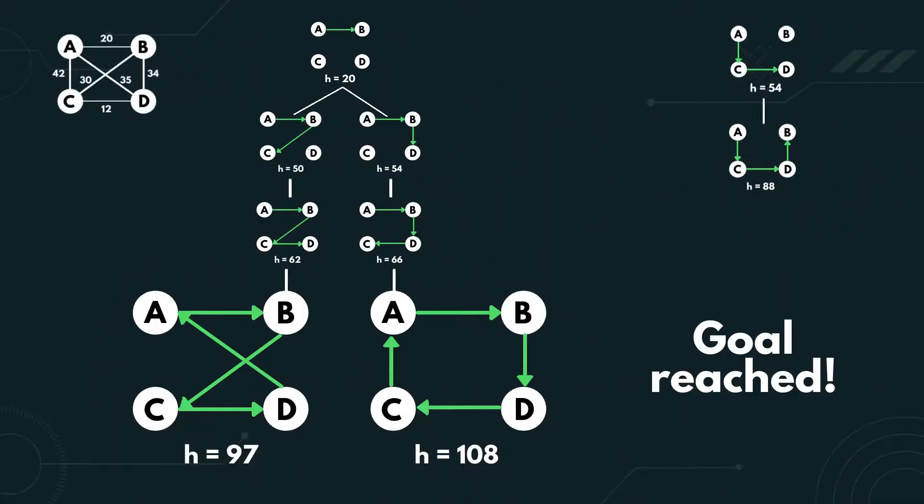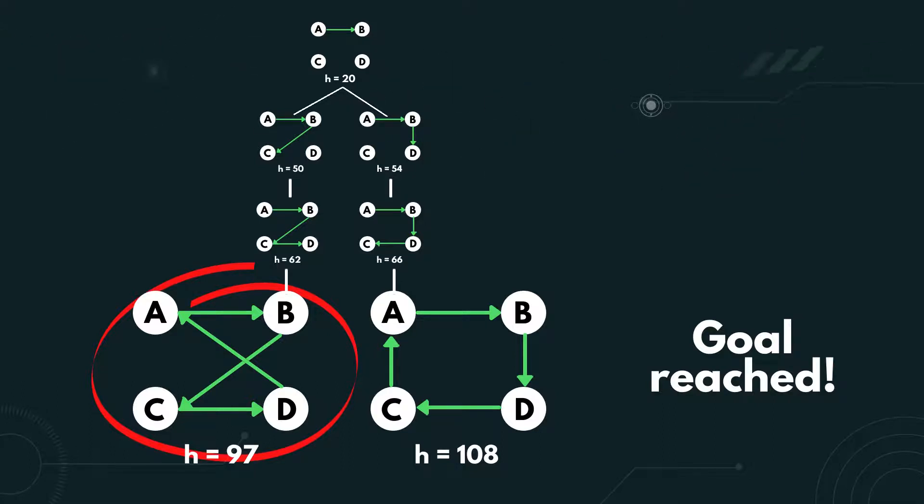We have now reached the goal. There are two goals generated, so A, B, C, D, A is selected, since it has the lowest heuristic value.